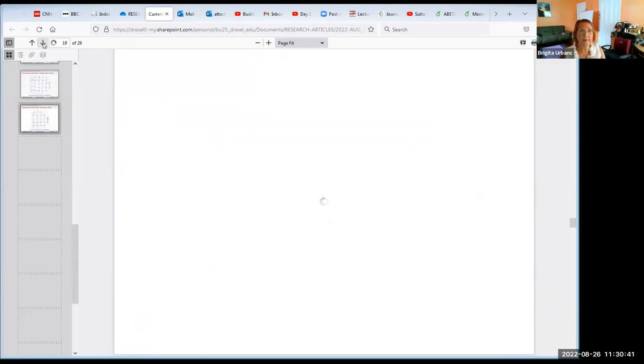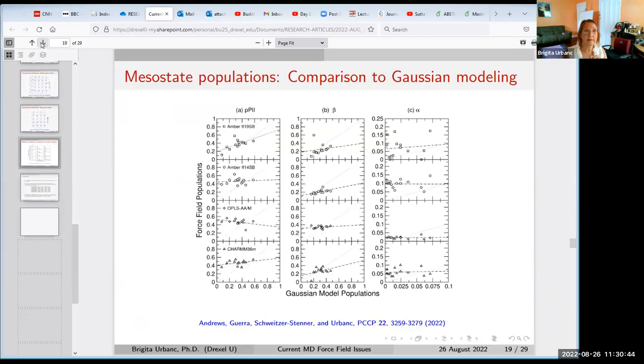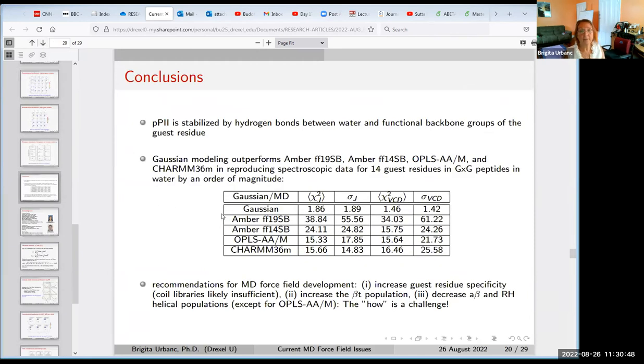I don't want to go in details here. Let me just conclude. We figured out that PP2 state is stabilized by hydrogen bonds between water and functional backbone groups of guest residues. So the backbone is important. Then the side chain only modulates this PP2. Gaussian modeling outperforms all force fields in reproducing spectroscopic data. But this table shows it outperforms by at least one order of magnitude, because you can calculate this chi-square average chi-square function over all 14 residues and chi-square VCD. You see the Gaussian model performs great because these values on average are below two. So Gaussian model is really good.